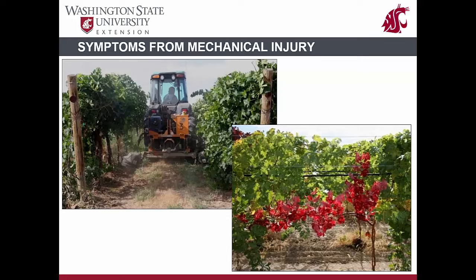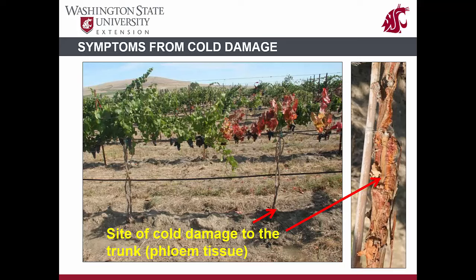In the case of girdling, only the affected leaf or shoot shows reddening, whereas the rest of the vine looks normal. Cold winters can cause damage to the grapevine vascular tissue, especially in young vineyards. This can lead to callus formation at sites of injury, which can disrupt phloem translocation of nutrients, effectively resulting in vine girdling. Such an injury results in reddening of leaves that sometimes mimic leaf roll disease symptoms.